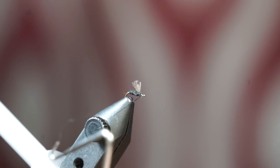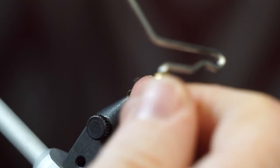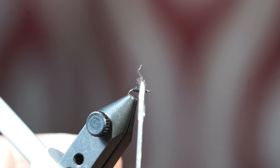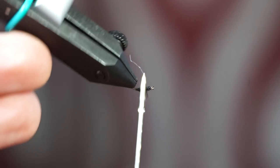You just want to make a small head on the fly, and then you can whip finish your fly. You can use head cement here, but I like using this UV curing resin made by Solarez called Bone Dry. This will keep the fly from coming apart even after many fish strikes.